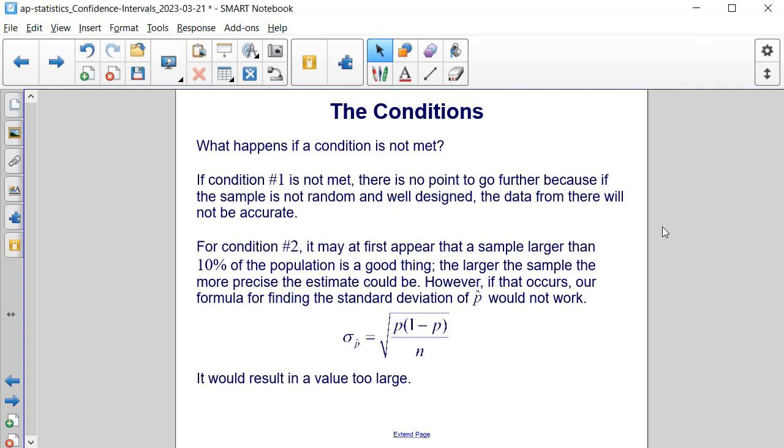The standard deviation for p-hat would be equal to the square root of p times the quantity 1 minus p, all divided by n, still within the square root. And it would result in a value that is too large.